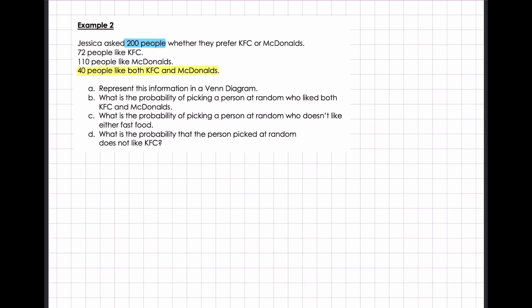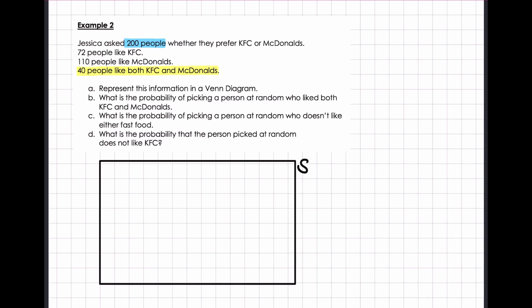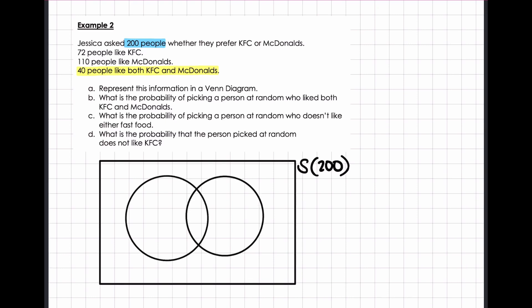So I'm not going to list my sample space because it consists of 200 people. I start with my rectangle for my sample space. Within the sample space I need to have 200 people. There are two events: KFC and McDonald's. I identify that there is an overlap — 40 people like both KFC and McDonald's — which means when I draw my circles, labelled K for KFC and M for McDonald's, they're going to intersect. Those 40 people go in the intersection.